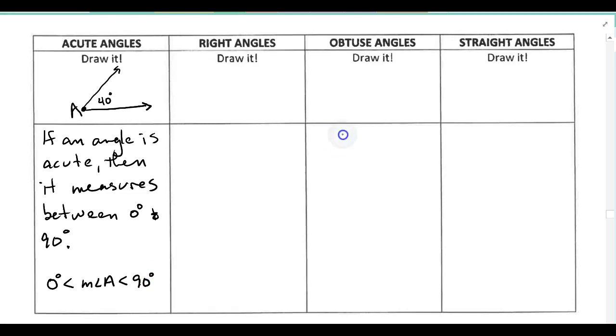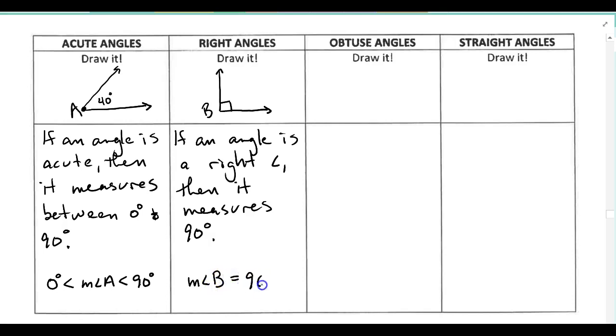Then moving on to a right angle. If we want to draw a right angle here, we have a special symbol to put into the vertex. If we put this little box in the corner, that's our tick mark to show that this is a right angle. We don't have to put 90 degrees in there, we just have to put that little box tick mark, which is reserved for showing we have a right angle. So our definition: if an angle is a right angle, then it measures 90 degrees. So for this one, it measures exactly 90 degrees. We'll call this angle B, and we could say the measure of angle B equals 90 degrees.